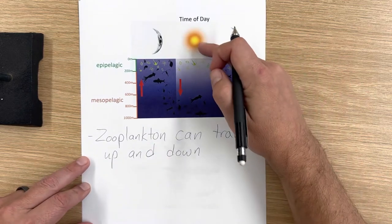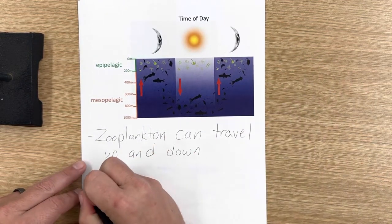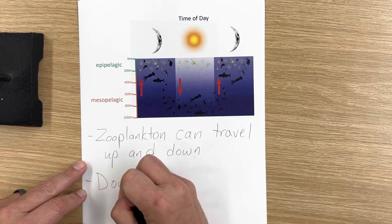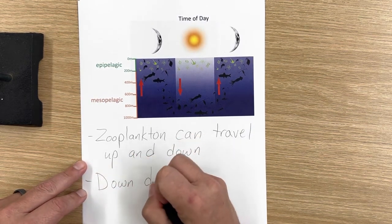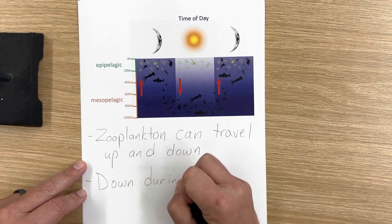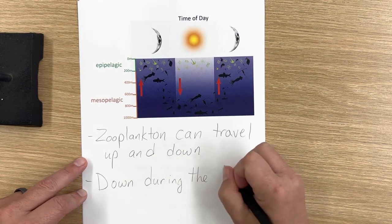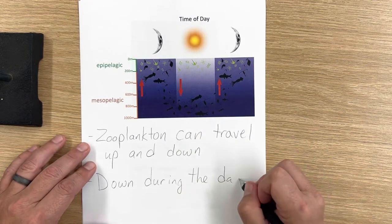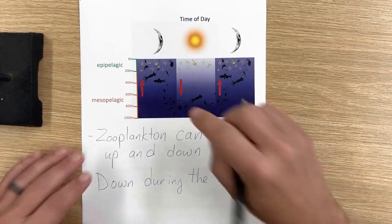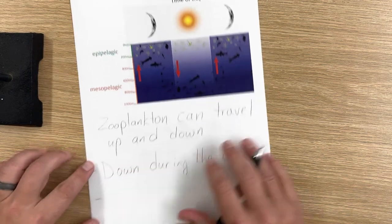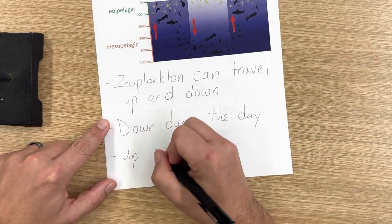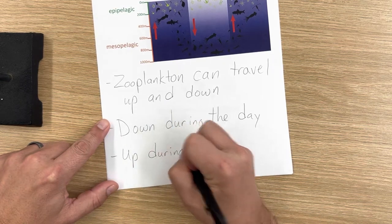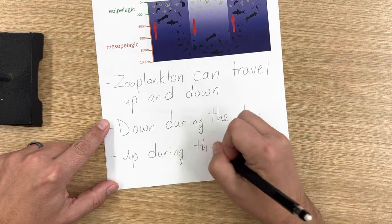And during the day, they've migrated down. So down during the day. And you can see not much light penetrates those deep depths during the day. So they are going down to where it's dark. But they go up during the night.